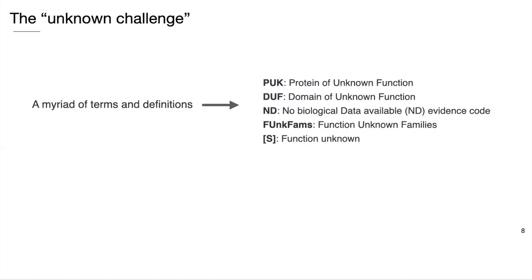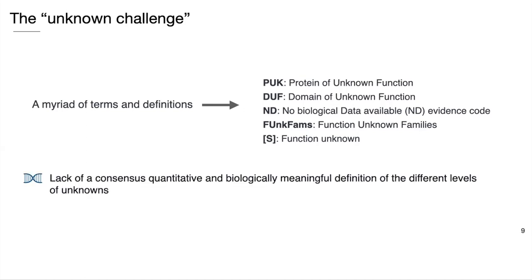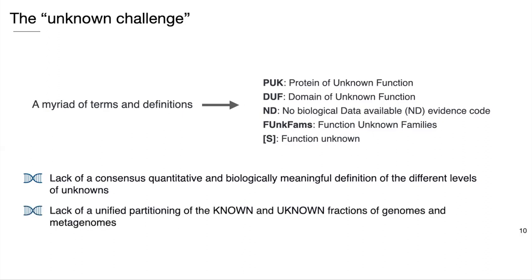All these efforts brought several advances to the field, but many challenges are still remaining. One of them is the fact that since first detection, the genes with unknown functions have been defined and described using many often qualitative terms that mostly reflect the specific purposes of different studies. What we are missing is a consensus, quantitative, and biologically meaningful description of the different unknown levels. In addition, we are also missing a standard partitioning scale capable of unifying both genomic and metagenomic data.